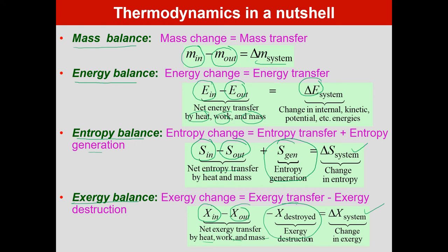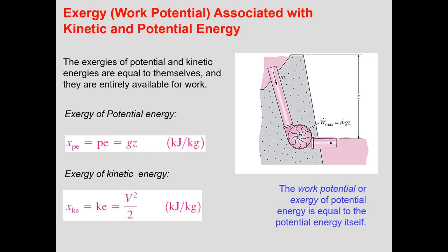This is the first important formula. The exergy of potential energy and kinetic energy are equal to themselves. For example, the formula for potential energy is Mgh, and this energy is almost fully available for useful work, so the exergy of potential energy is equal to Mgh. In the same way, exergy of kinetic energy is equal to V²/2. This energy is already available for useful work, so the exergy of potential and kinetic energy equals themselves.